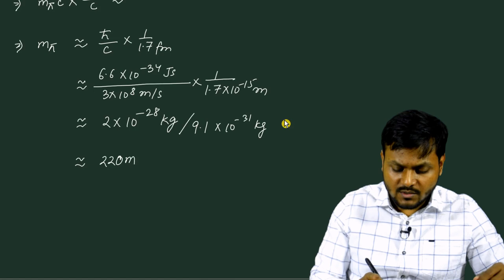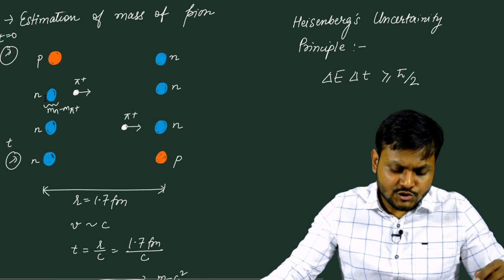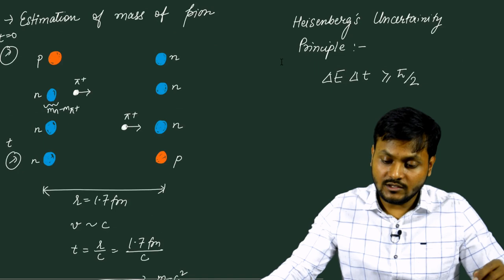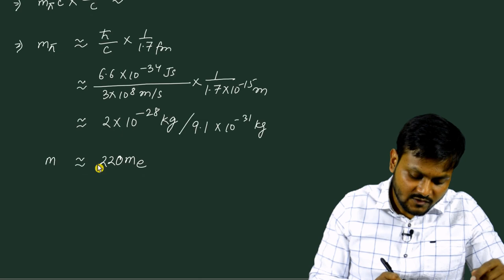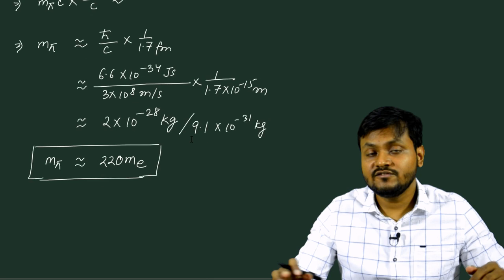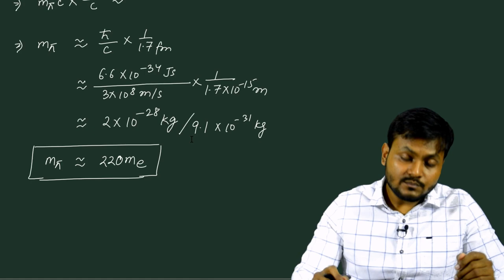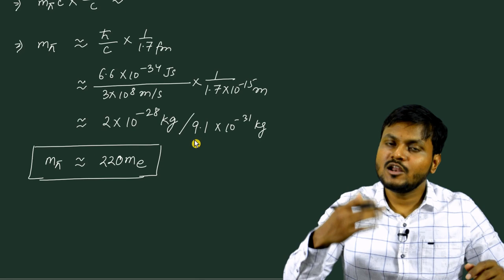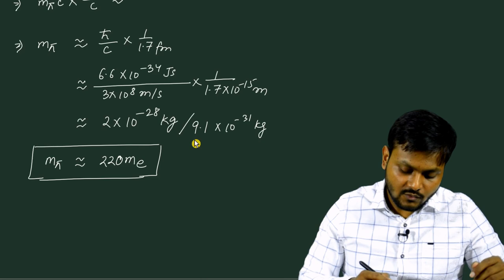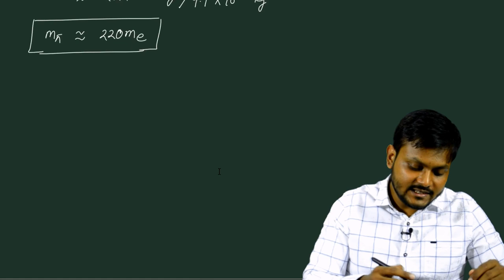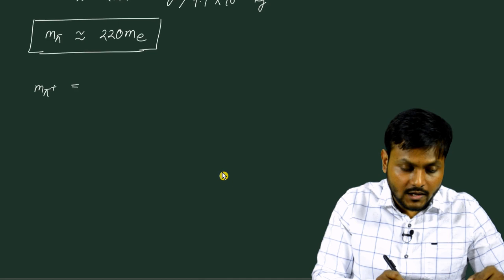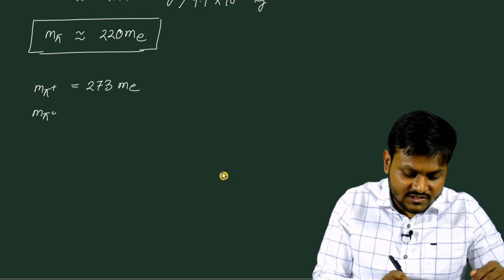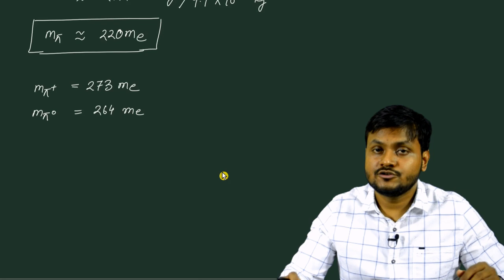Based on this idea of a particle being exchanged virtually very very fast between neutrons and protons so that we cannot even detect them experimentally, we use the uncertainty principle to estimate what the mass of such a particle should be — and the mass should be around 200 times the mass of the electron itself. The success of Yukawa's model, or the Meson theory of nuclear forces, comes as a result of experimental validation. Later on, after the theory was given, it was indeed found that there are particles in nature which have masses somewhat similar to the quantity we have calculated. Almost a decade later, it was found that there was a particle similar to the pion positive with a mass of around 273 times the mass of the electron, and another particle — the neutral pion — with around 264 times the mass of the electron, thereby validating this kind of calculation and the theory associated with the nature of the nuclear force.